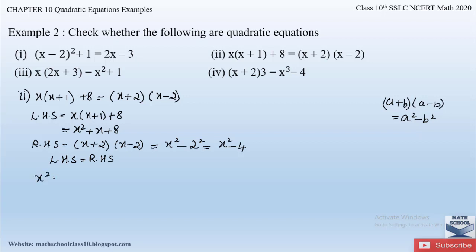Equating both sides: x² + x + 8 = x² − 4. Sending the right-hand side terms to the left: x² + x + 8 − x² + 4 = 0. The x² and −x² cancel out. We are left with x + 12 = 0.